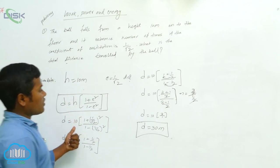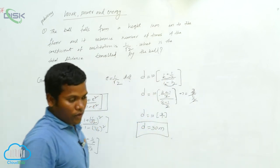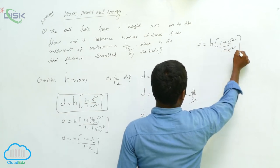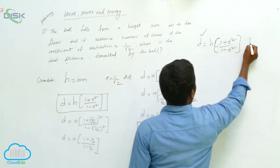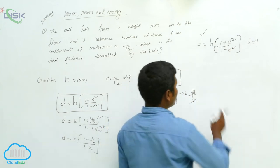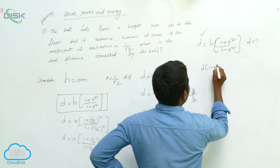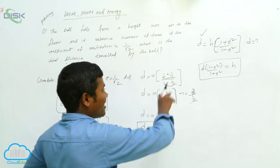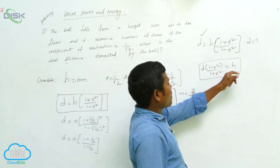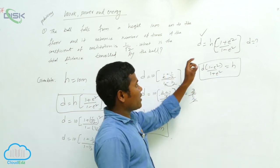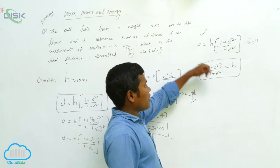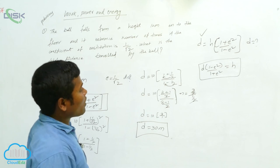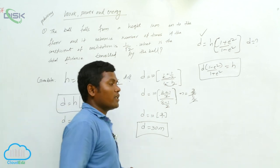Sometimes the problem may ask for height instead of distance. If D is given and h is unknown, use the rearranged formula: h = D times (1 - e²) by (1 + e²). Based on what the problem asks — distance or height — choose the appropriate formula, substitute the values, and calculate to get the answer.